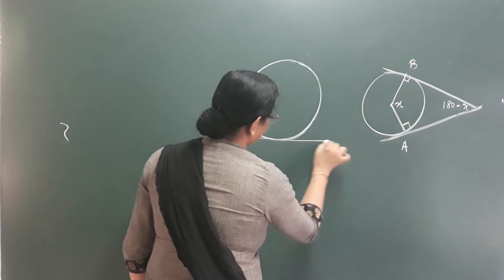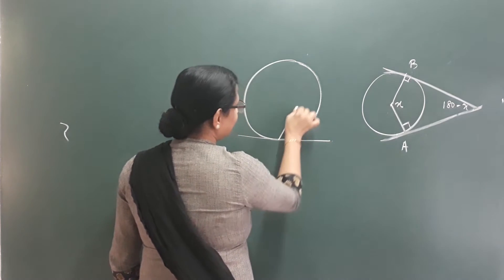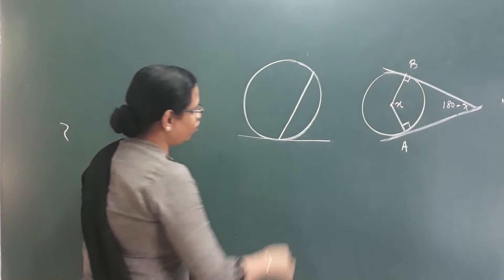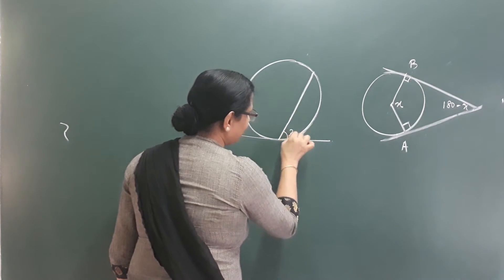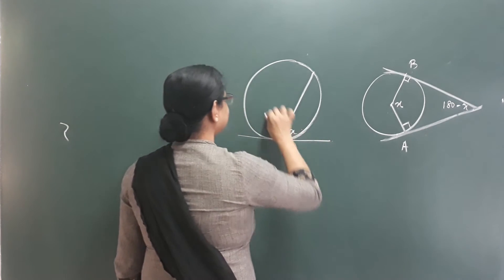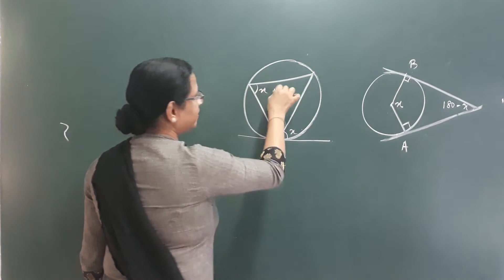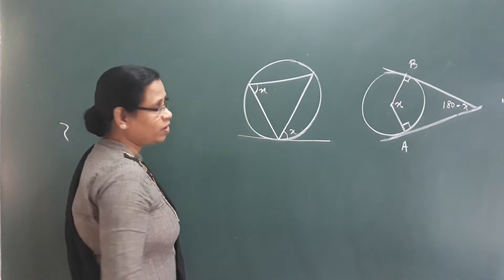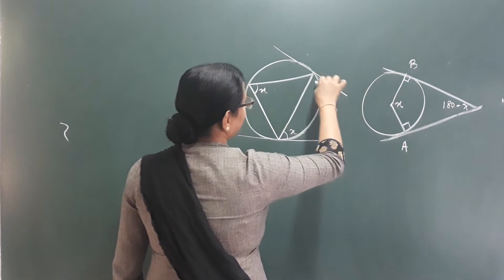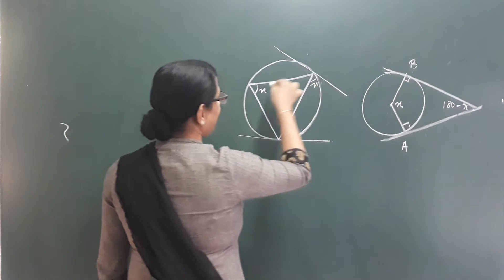This is a tangent. The tangent comes from a chord. This is a chord. If we have an angle, its angle on the right side — the angle on the right angle is a right angle.